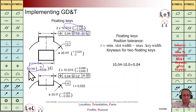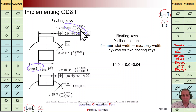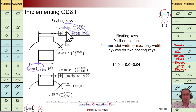The maximum width of the key is 10 — highlighted here with this purple color on the left-hand side. This is the maximum value for key width: 10. The minimum value for the key slot is 10.04, and also here it is 10.04. When we subtract these two we get 0.04, which is TZ for this positioning.